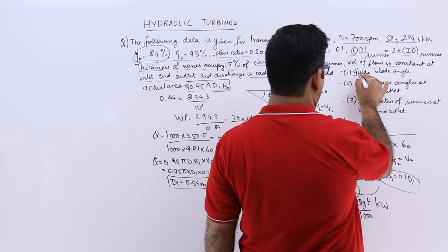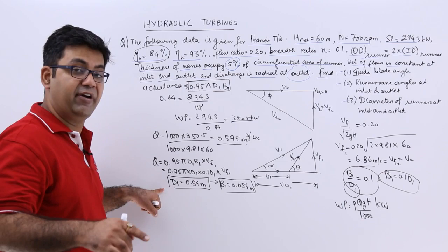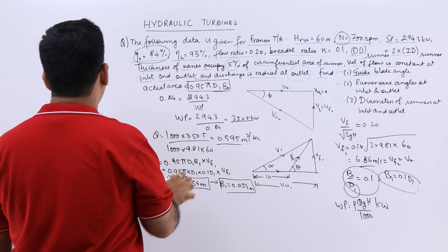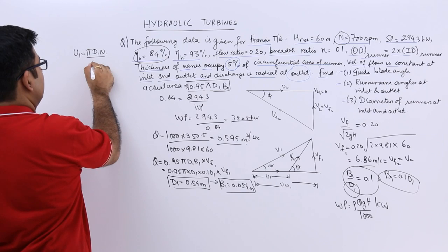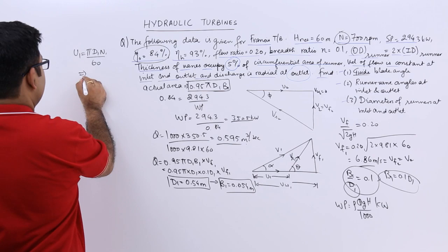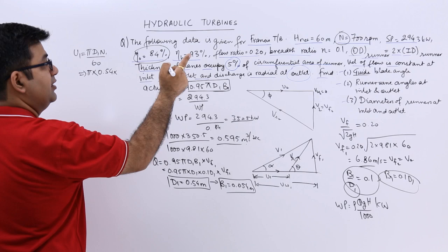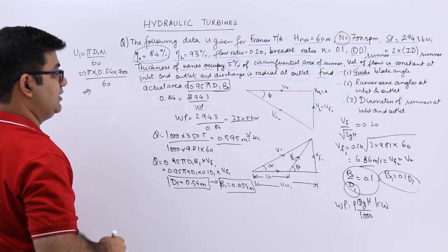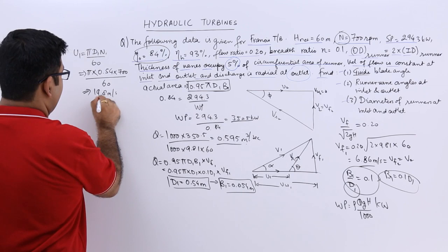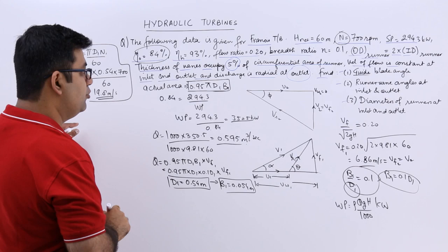Now that we have D1, we can find the tangential velocity U1. U1 = π × D1 × N / 60 = π × 0.54 × 700 / 60, which gives U1 = 19.8 meters per second.